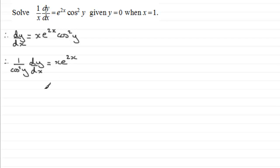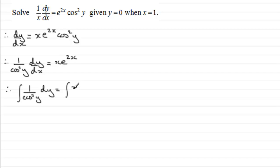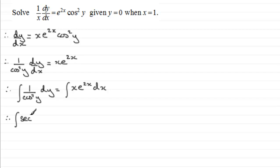Now I need to get rid of the dx, so I'm going to take it up and remember at that stage you have to integrate both sides. So it becomes the integral of 1 over cos squared y dy equals the integral of x e to the 2x with respect to x. I've now separated the variables — all the y's on one side and all the x's on the other. To integrate 1 over cos squared y, I recognise that this is exactly the same as integrating sec squared y.